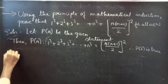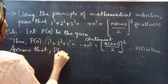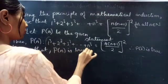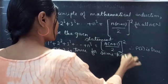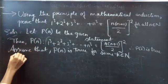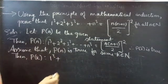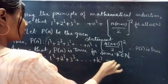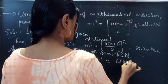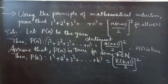Now assume that P(n) is true for some k which belongs to natural numbers. Then P(k) gives us: 1³ + 2³ + ... + k³ equals k(k+1)/2 whole squared — simply replacing n with k to get P(k).